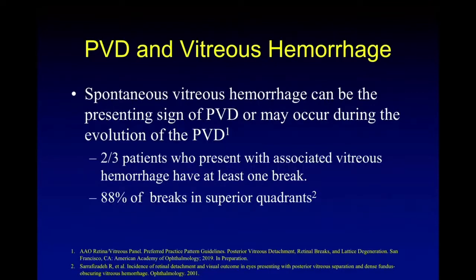When we have posterior vitreous detachment and vitreous hemorrhage, the risk of retinal tear significantly increases. When there is vitreous hemorrhage and PVD, two-thirds of patients have a retinal break, and they need to be detected. The problem is that when we have vitreous hemorrhage, examination is more difficult. And when there is a break, most of them — about 88% — are in the superior quadrants.